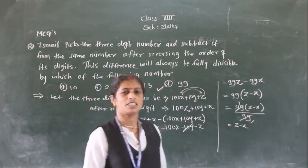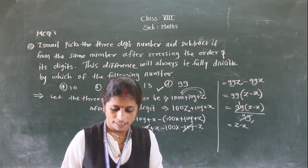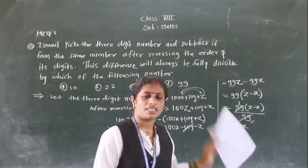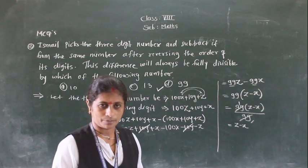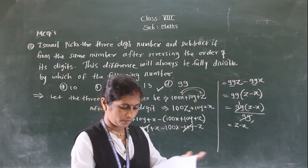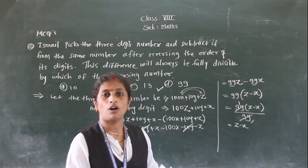From this worksheet, this first example is the same type as the previous example. We have seen how to find the value of Z. This is the last example.